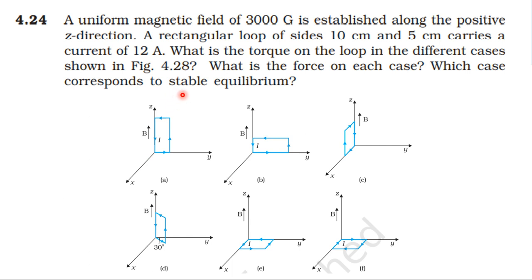From NCERT textbook, from the topic Moving Charges and Magnetism, additional exercise 4.24. A uniform magnetic field of 3000 Gauss is established along the positive Z direction. A rectangular loop of sides 10 cm and 5 cm carries a current of 12 Ampere. What is the torque on the loop in the different cases shown in the figure? What is the force on each case? Which case corresponds to stable equilibrium?